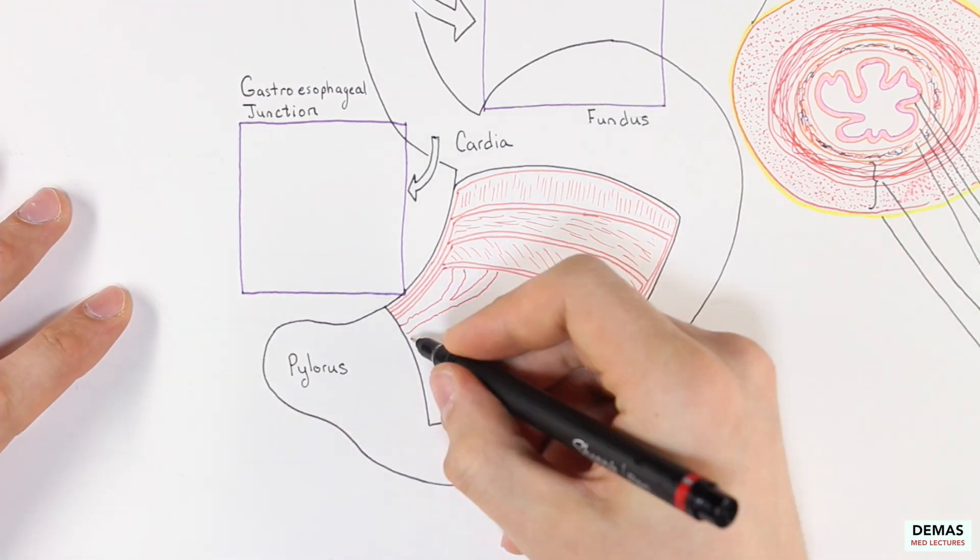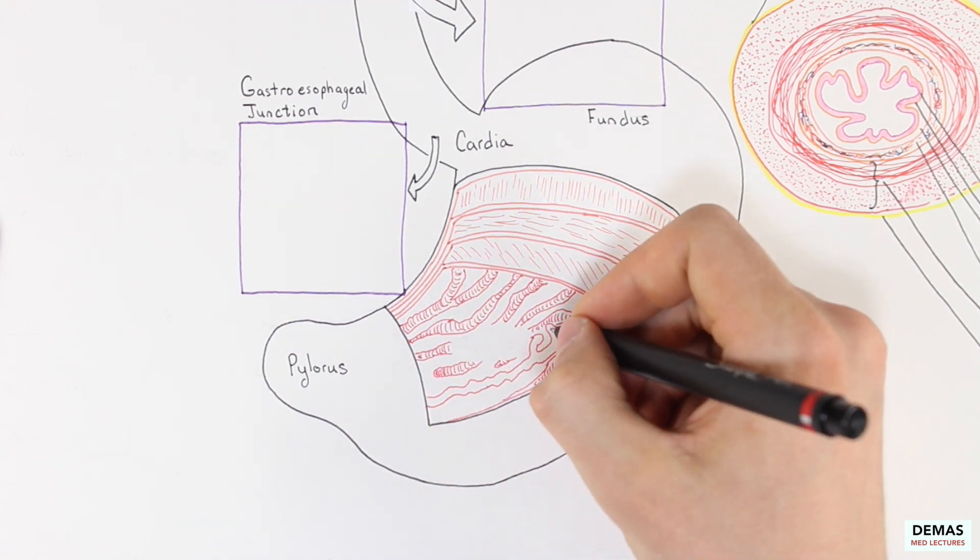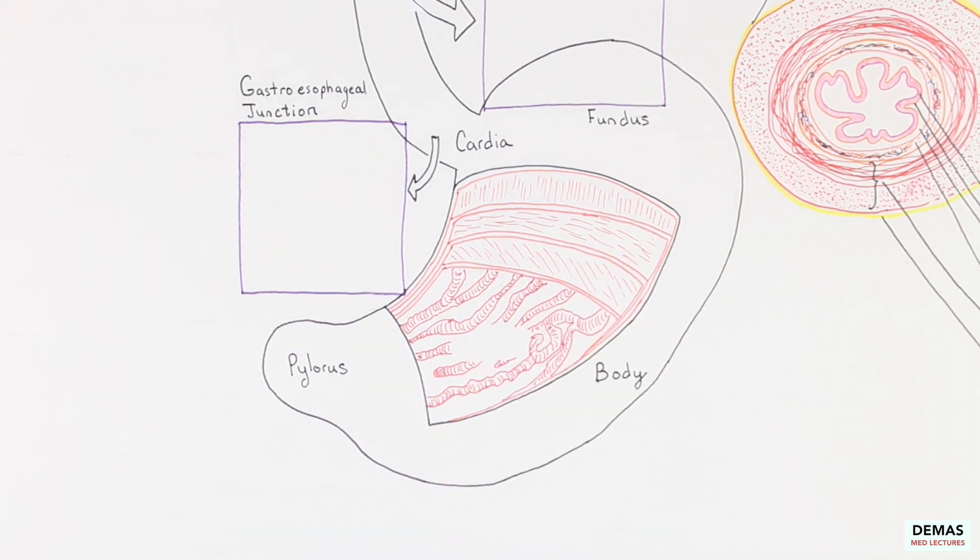Lastly, if we look at the gross structure of the stomach, you will notice the ridge and folded structure of the stomach. This inner structure is called rugae.